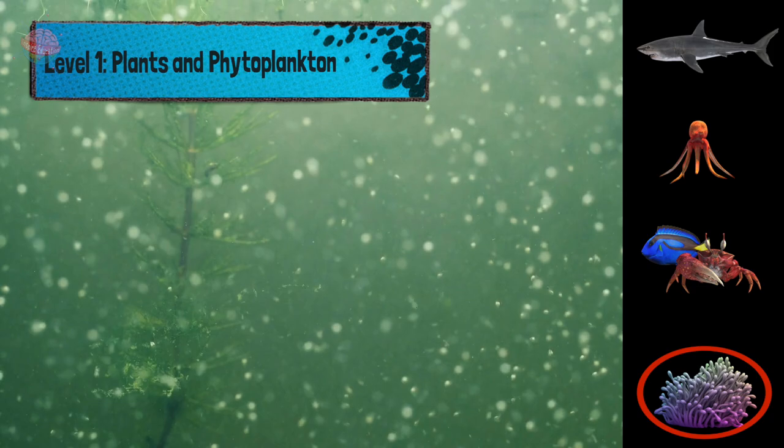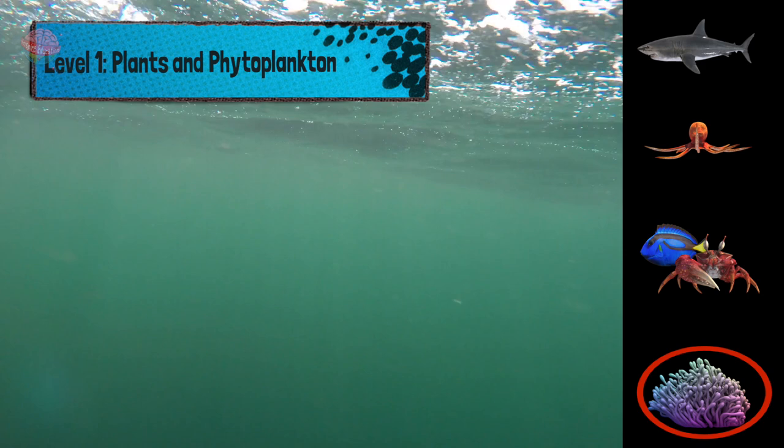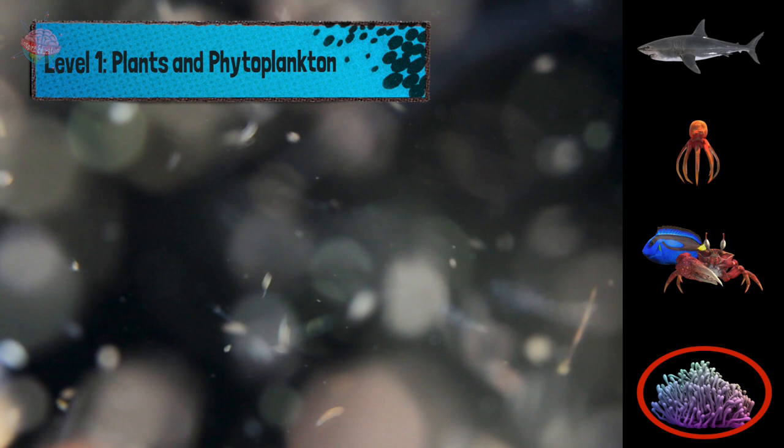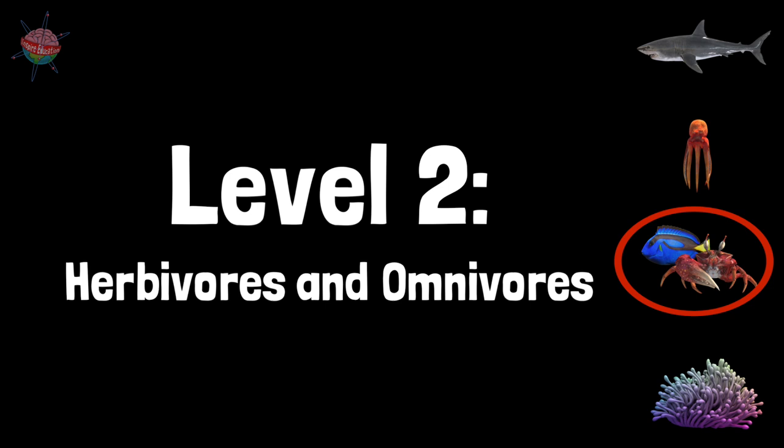Since phytoplankton rely on sunlight for energy, they live near the ocean's surface. About one percent of all living things in the world are phytoplankton, and they produce about half of the world's oxygen.